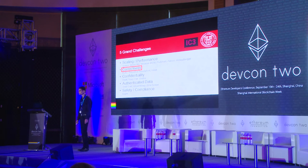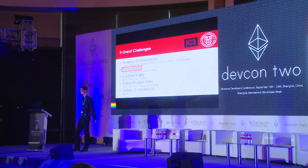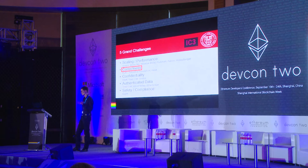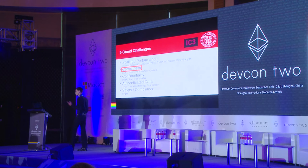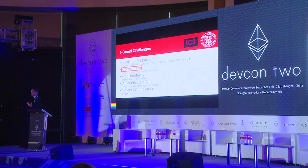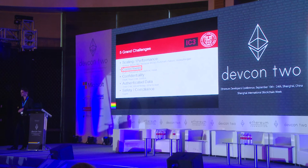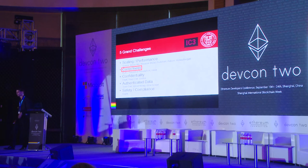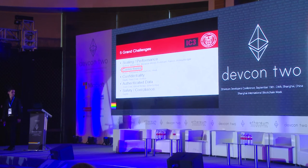Here is the work that IC3 is doing. As far as we see it, there are five grand challenges in smart contracts and cryptocurrencies: one is scaling and performance, the second is correctness, third is confidentiality, the fourth is authenticated data — getting data sources into these systems — and the last one is safety and compliance, which you've heard a little bit about today.